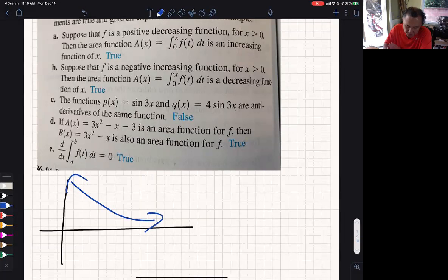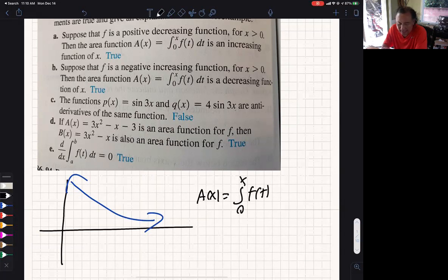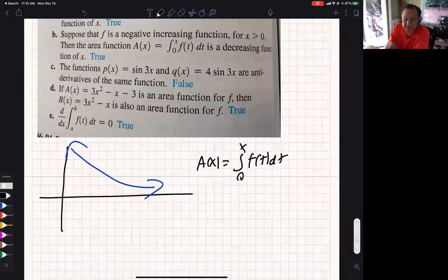And the area function, so this area function will give you the net area, starting as 0 to x of f(t)dt. Is that going to be an increasing function? No, wait. The area function is a decreasing function. Okay, so let's talk about the area.